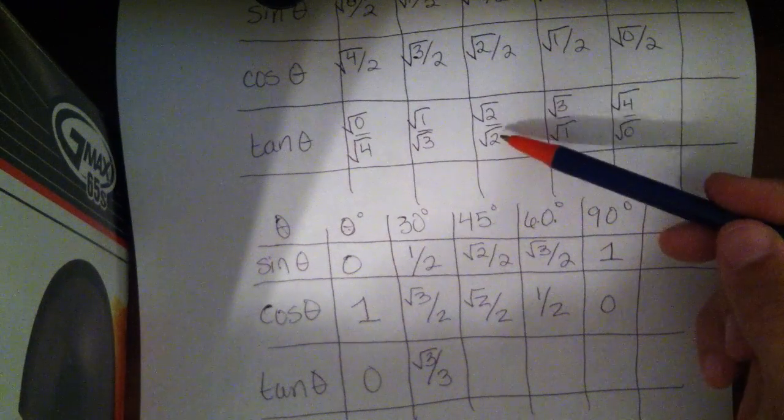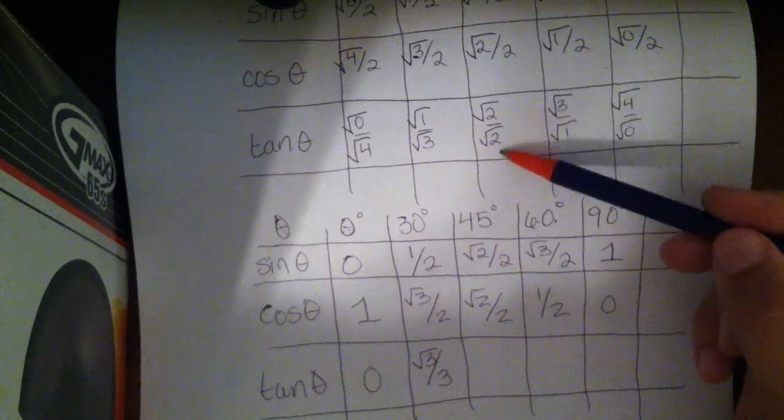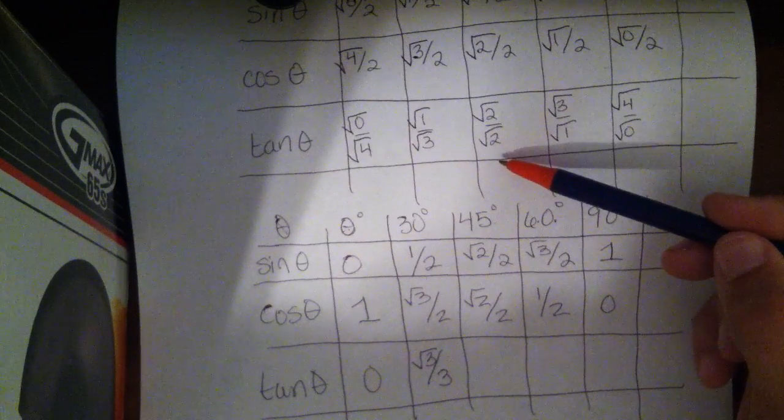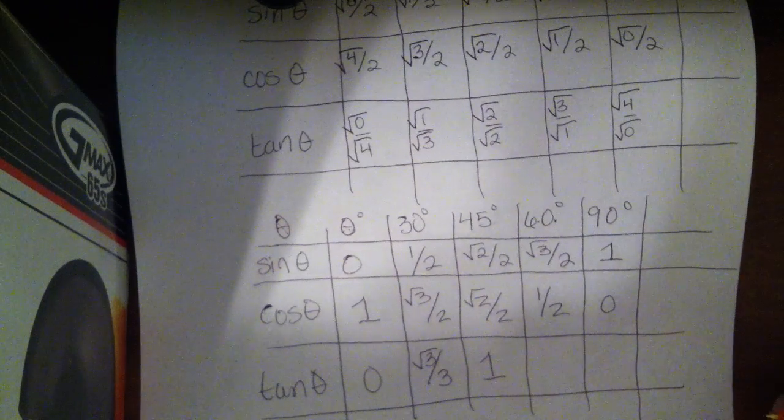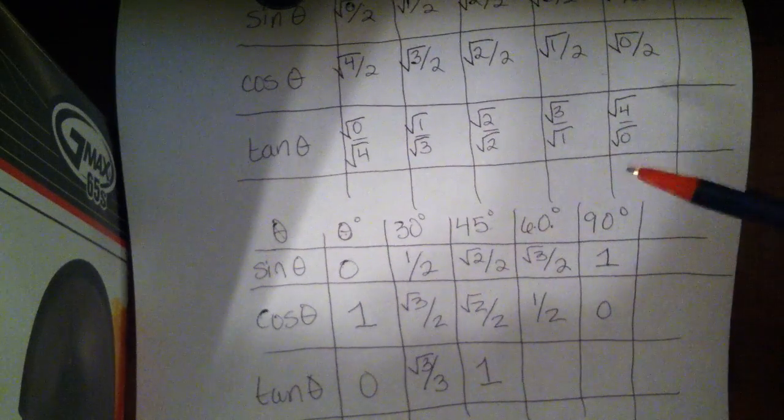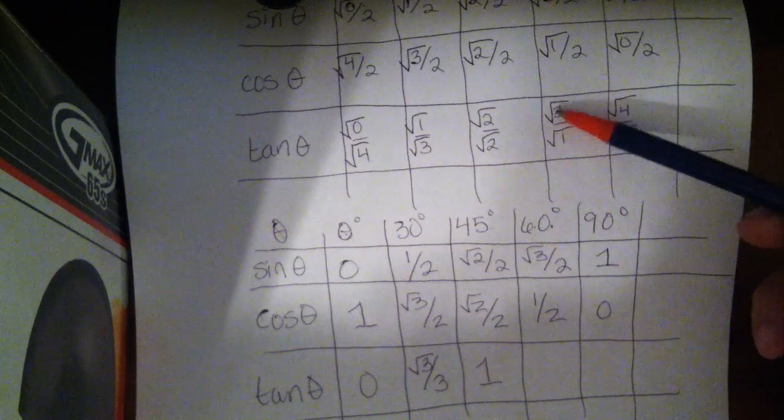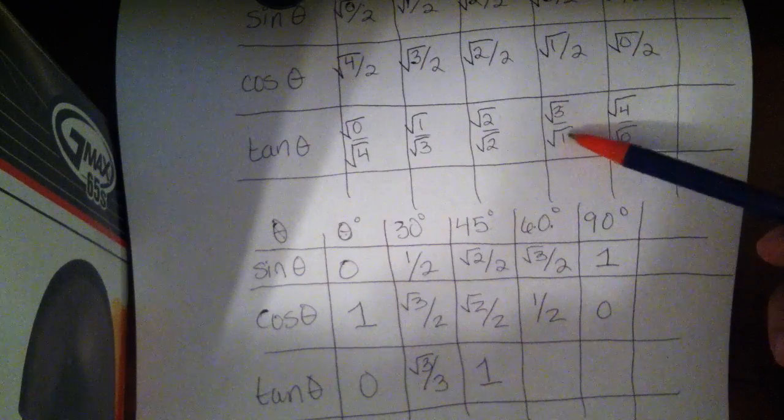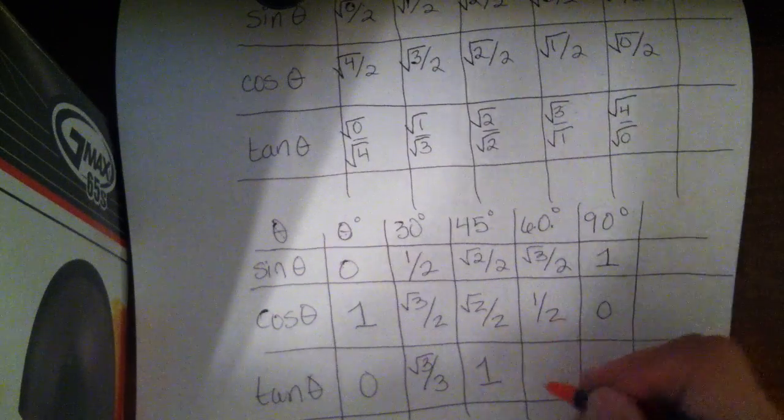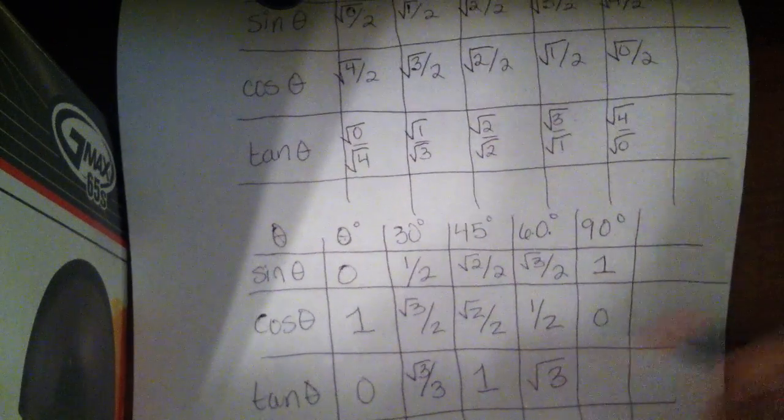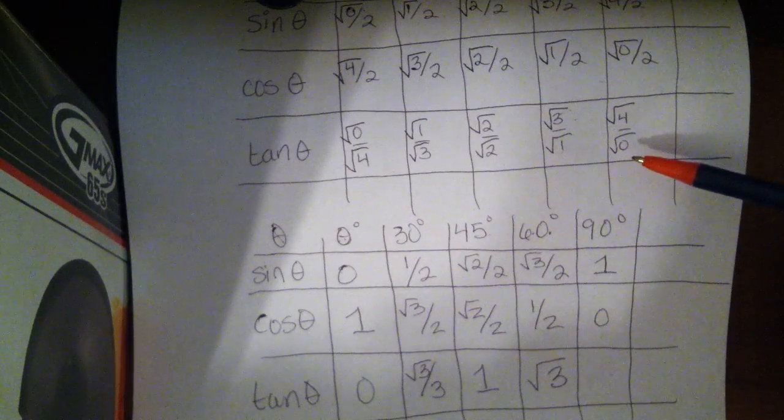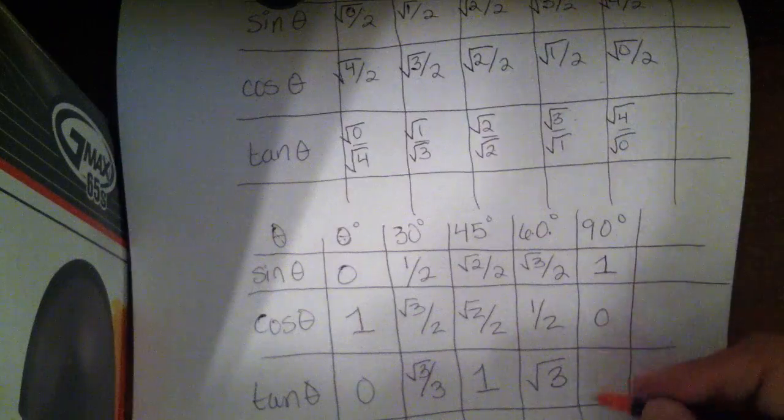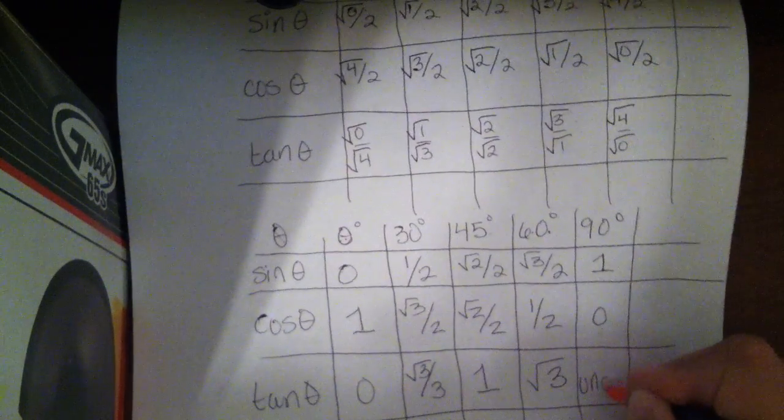For tangent of 45, we've got the exact same number in the top and the bottom of the fraction, and when you divide a number by itself, the result is 1. For tangent of 60, we've got the square root of 3 divided by essentially just 1, so that's square root of 3. And then for tangent of 90, we've got 0 in the denominator, and dividing by 0 is undefined. So the tangent of 90 is undefined.